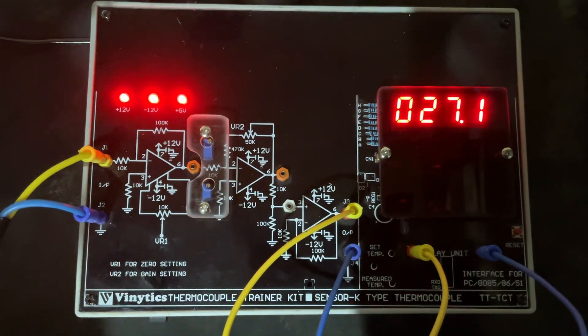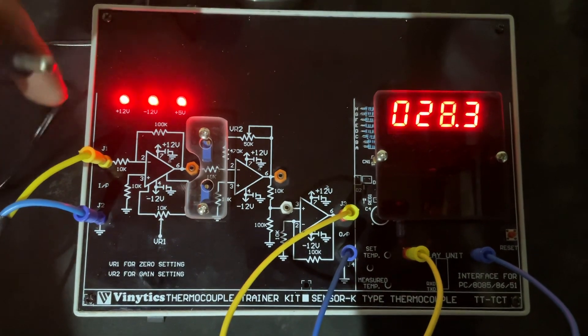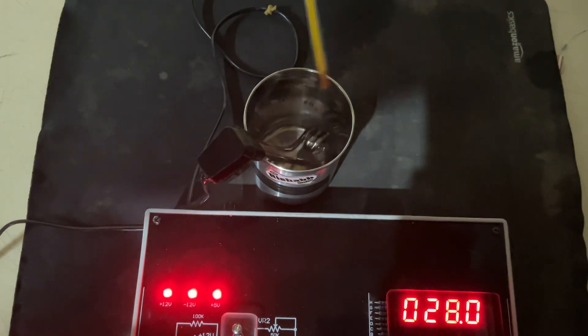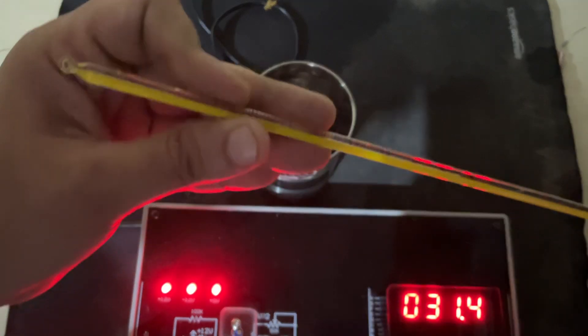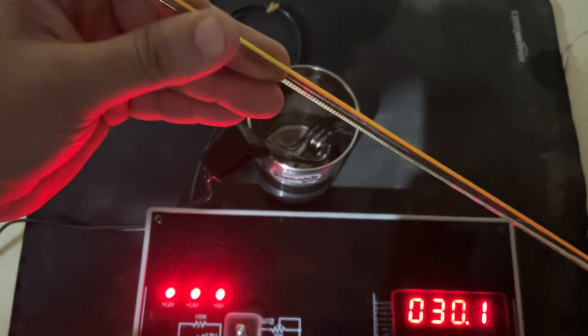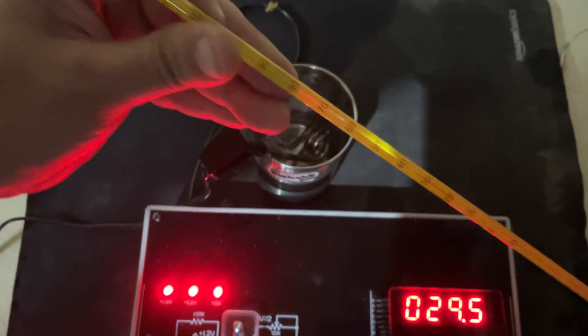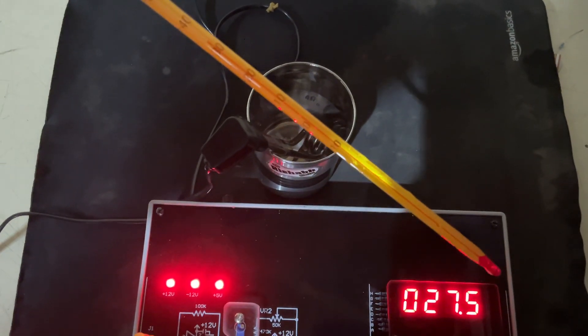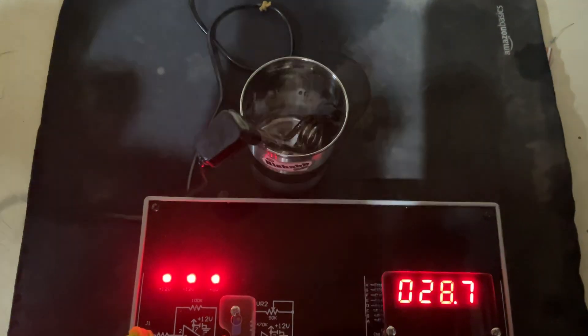Now what we will do is show you how it is measuring the increasing current. We have taken this glass filled with water. This is the temperature - this is the traditional thermometer which is showing the temperature. The temperature is approximately 30 degrees. As you can see, it is approximately 30. Now we are...